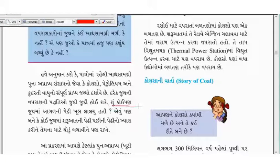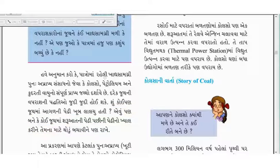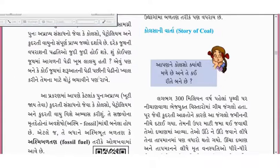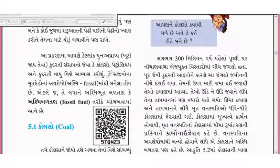ક્યારેક કોઈ જૂથમાં આગળની પેઢી ખૂબ લાલચું હોય, ક્યારેક કોઈ જૂથ આગળની પેઢીઓ માટે થોડું બચાવી રાખે. આ પ્રક્રિયા દ્વારા આપણે ખૂટી જઈ તેવા કુદ્રેતી સ્ત્રોતો - જેવા કે કોલ્સો, પેટ્રોલ્યમ, અને કુદ્રતી વાયુ - વિશે અભ્યાસ કરવાનો છે.